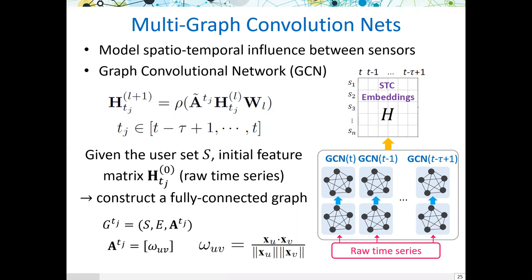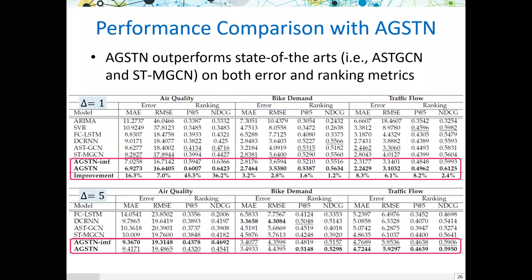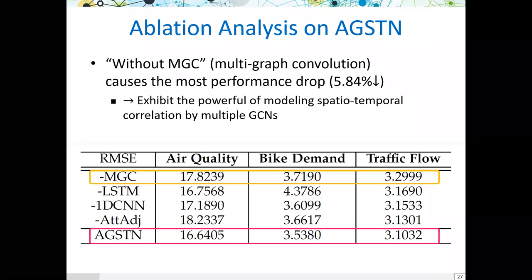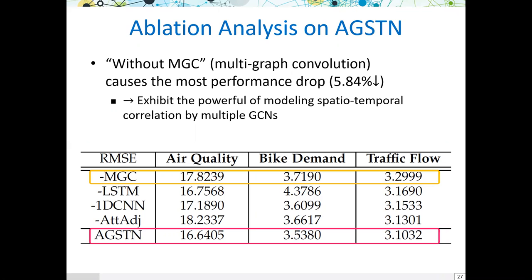We conducted experiments on three urban spatial-temporal forecasting datasets: air quality prediction, bike-demand prediction, and traffic flow prediction. Results show that AGSTN consistently outperforms state-of-the-art models including AST-GCN and STM-GCN on both error and ranking metrics. Removing graph representation learning causes around a 5.8% performance drop, again proving the power of graph representation learning for spatial-temporal time series forecasting.